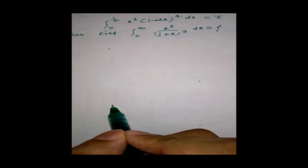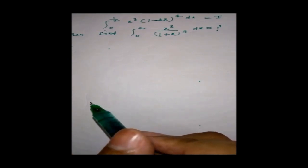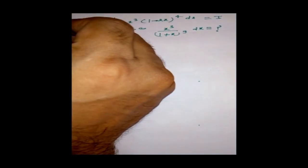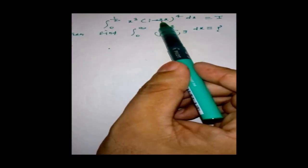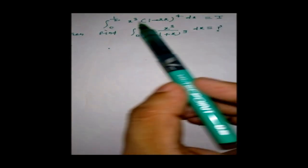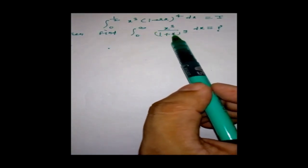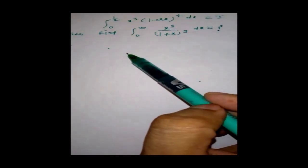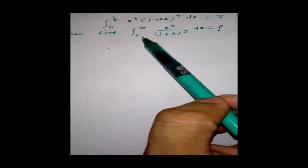Okay, here are some JEE Advanced level integration problems. Let's start with this one: given I equals integral from 0 to 1/2 of x cubed times (1 minus 2x) raised to 4 dx, we have to find the value of the integral from 0 to infinity of x raised to 3 divided by (1 plus x raised to 9).